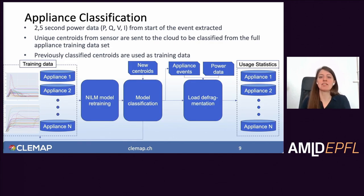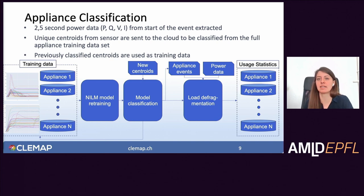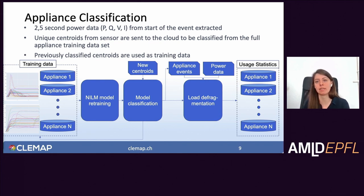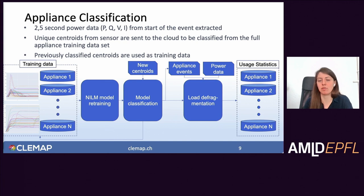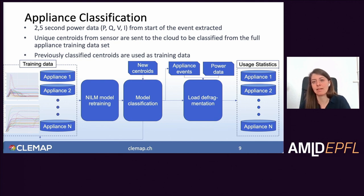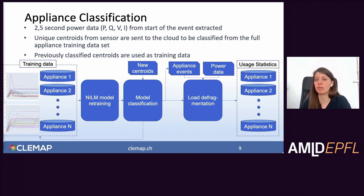For appliance classification: the power data is used to characterize new appliances and compare them to existing appliances in our database. Our training data exists on our cloud platform in our energy databases for previously mapped appliances. The algorithm compares new appliances to the existing database, and the newly classified centroids can then be added to the training dataset to improve the algorithm. Once classified, we know for each appliance event in a given day what is running, and we can perform load disaggregation and compute user statistics.